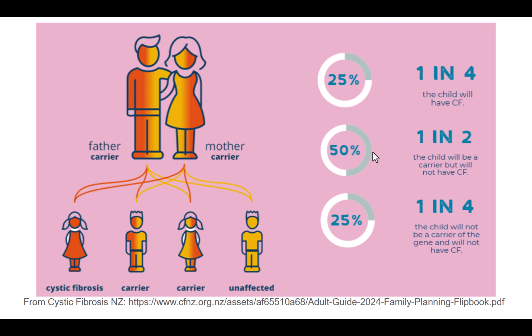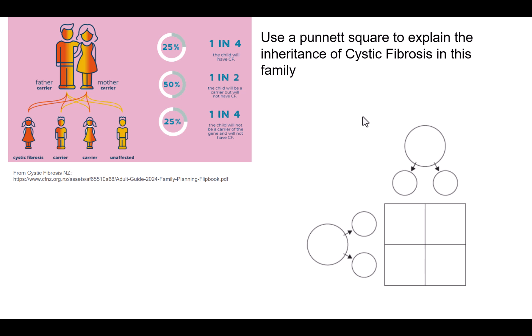We're going to use a Punnett square to look at how those alleles are inherited. We take both the mother and father's genotype — because they're carriers, we know they have one dominant and one recessive, so they are heterozygous for cystic fibrosis. We then look at how those alleles can be produced in the gametes. Each parent can produce gametes that either have the dominant allele or the recessive allele. There are four boxes in the Punnett square — that doesn't mean there will be four offspring; it's giving you an idea of the likelihood or chances of the offspring having a specific genotype.